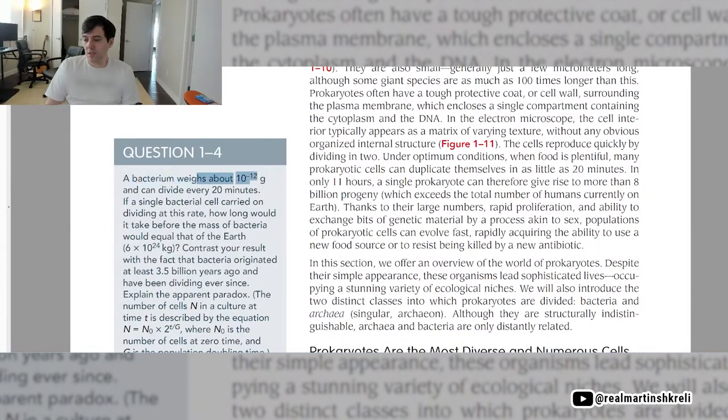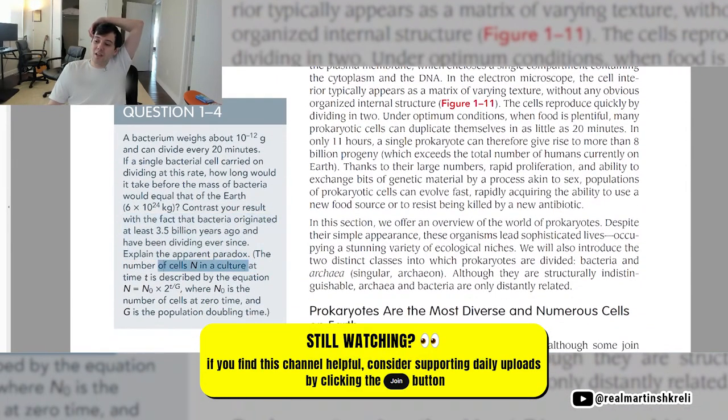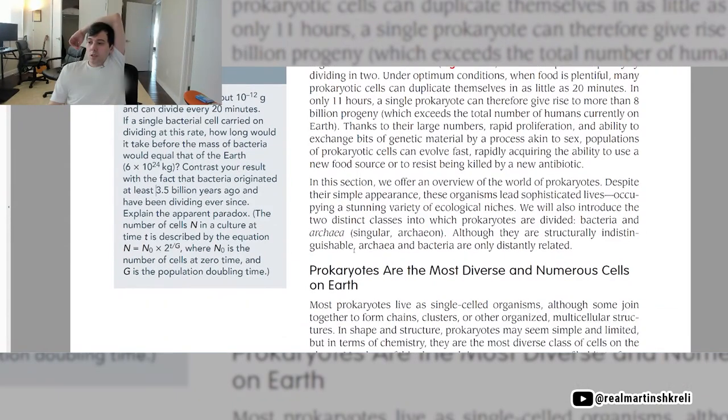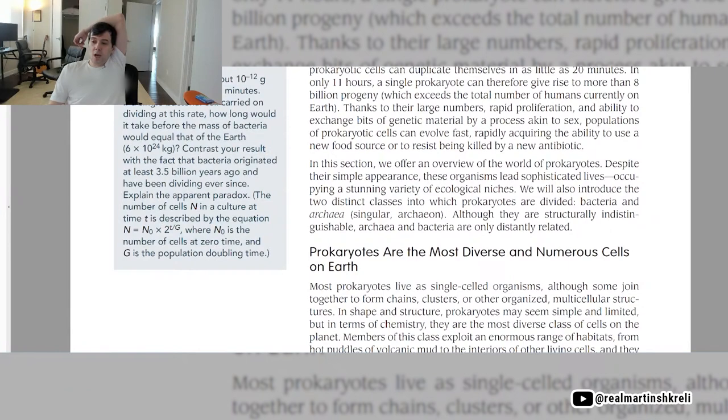Question 1.4. A bacterium weighs about 10 to the negative 12th grams, a picogram, and can divide every 20 minutes. If a single bacterial cell carried on dividing at this rate, how long would it take before the mass of the bacteria would equal that of the earth? The earth weighs 6 times 10 to the 24th kilograms. Contrast your result with the fact that bacteria originated at least 3.5 billion years ago and have been dividing ever since. Explain the apparent paradox. The number of cells n in a culture at time t is described by the equation n equals n sub 0 times 2 to the t over g, where n sub 0 is the number of cells at zero time and g is the population doubling time. So basically you would expect bacteria to overrun the whole planet over time, but that is not what's happened. The obvious answer is that bacteria don't only divide, they also die.